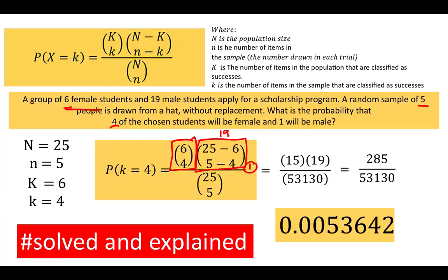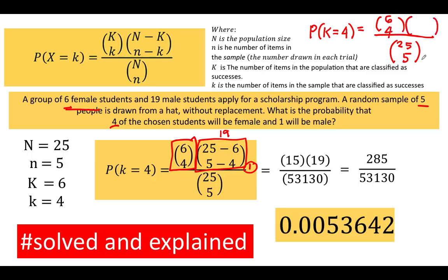Going back to the problem, you do not need to memorize this formula. You just identify the sample space — 25 students taking a sample of 5 — then identify successes from the 6 female students selecting 4, and the remaining 1 from the 19 male students. After setting up the expression, it is just a matter of computation. In today's world, a graphing calculator or online calculator makes computing this easy. Thank you very much, and we hope to see you again in our next video. Bye for now.